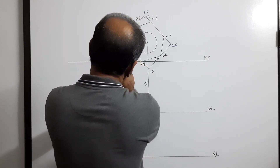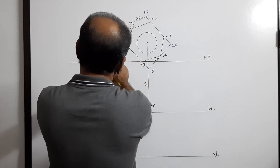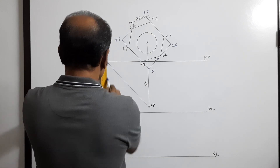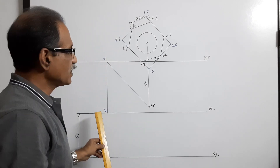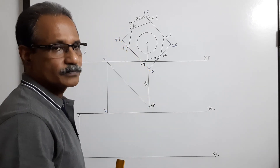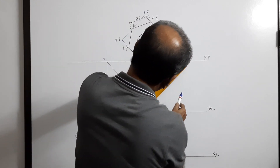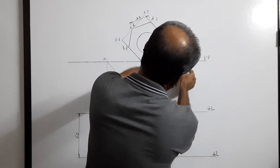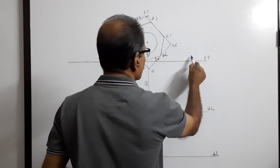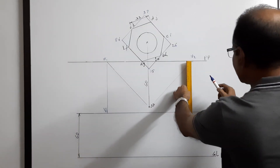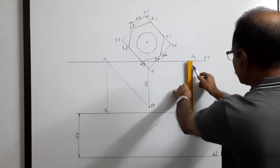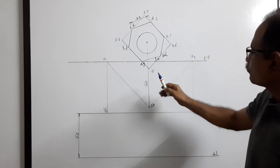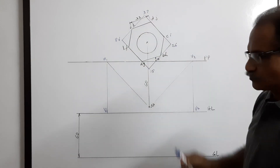To draw the box you need the vanishing points. To find vanishing point V1, draw a line through SP parallel to one side of the box, mark it as small v1, and drop it down to HL to get capital V1. Similarly, draw a line through SP parallel to the other side to get small v2, drop it down to HL to get capital V2. V2 is the vanishing point of that side and all lines parallel to it.